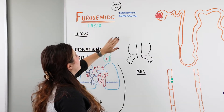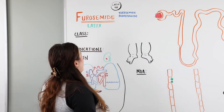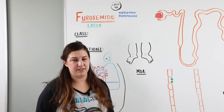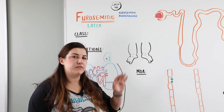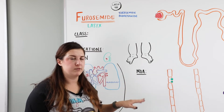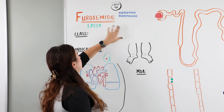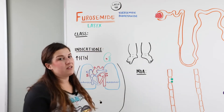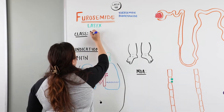Furosemide, along with torsemide and bumetanide, are medications that fall into the same class. Today for this lecture we're just going to specifically focus on furosemide, but all three of these medications fall into the same class — and that class is loop diuretic.